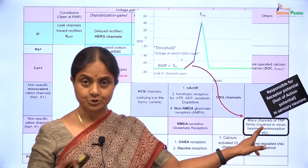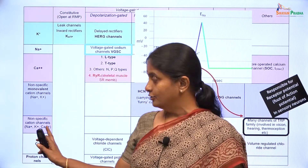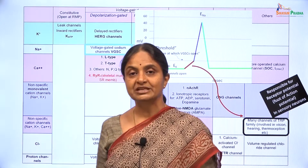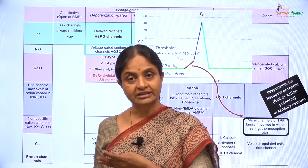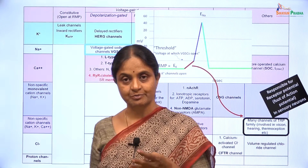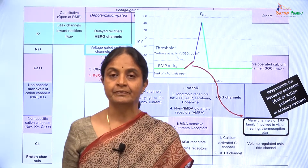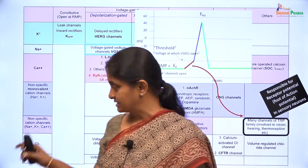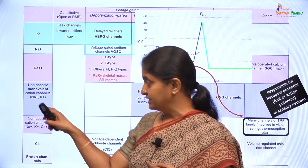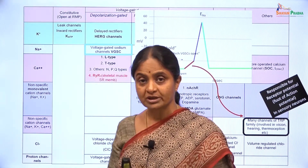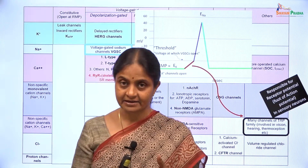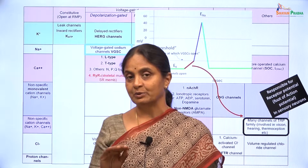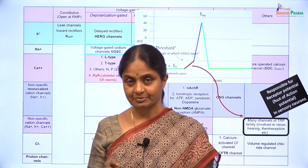These TRP channels, as seen in this table, are non-specific cation channels, which means they permit all three cations to go past — sodium, potassium and calcium. There are some textbooks which refer to these channels — both these classes of channels — as sodium channels, but that is technically incorrect. We will see that more in context when we discuss nicotinic acetylcholine receptors.